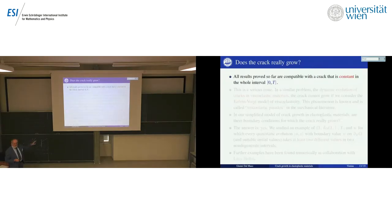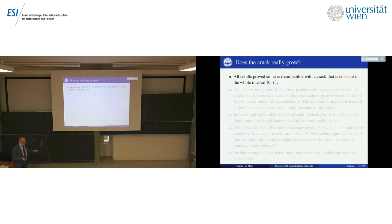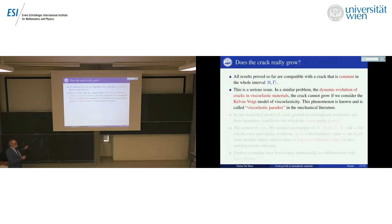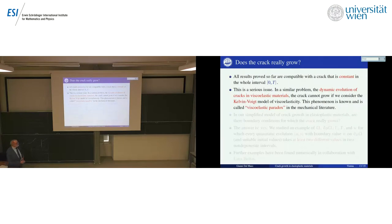When we finished the proof, we were worried that all these results might be compatible with the crack never moving — which would be a disaster. Unfortunately, in a similar problem for dynamic crack evolution in viscoelastic materials using the Kelvin-Voigt model, this drawback appears: the crack stops. This is known in the mechanical community as the viscoelastic paradox, meaning one must use a different model for dynamic viscoelastic materials.